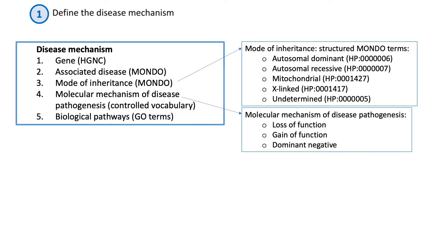The four-step process to evaluating functional evidence described in the recommendations includes first defining the disease mechanism, since an understanding of the underlying gene-disease mechanism is crucial to interpret functional assays. The mechanism can be described with a structured narrative that includes the gene, the associated disease, the mode of inheritance, the mechanism of disease pathogenesis, and the related biological pathways. Using existing ontologies and structured terms, including MONDO terms and GO terms, is recommended.